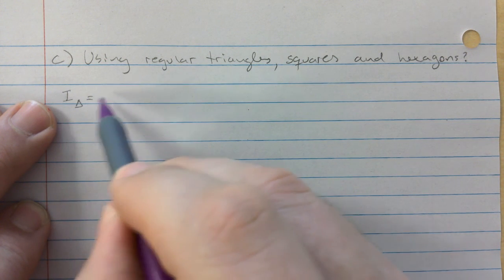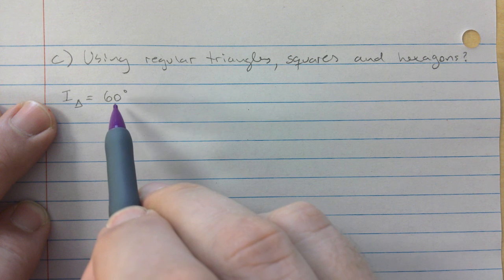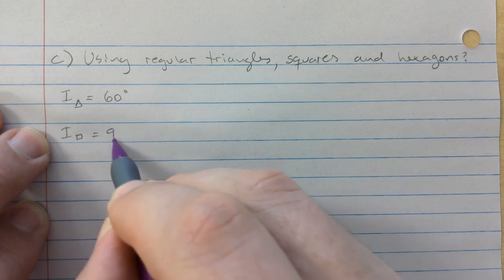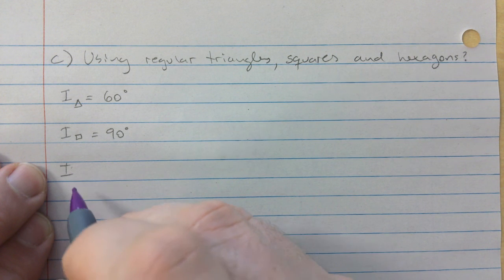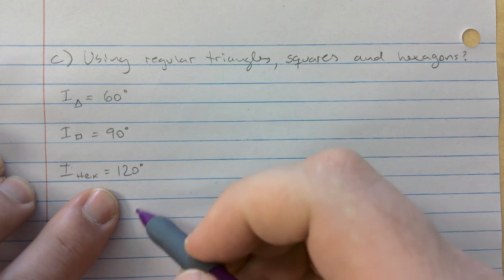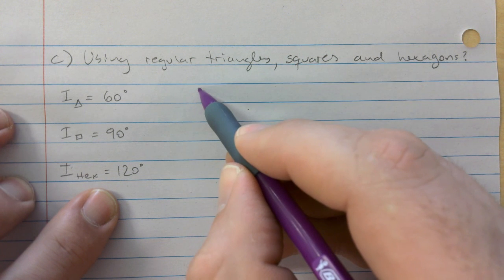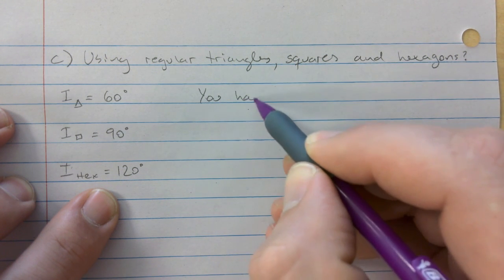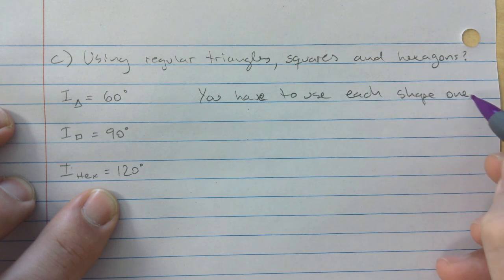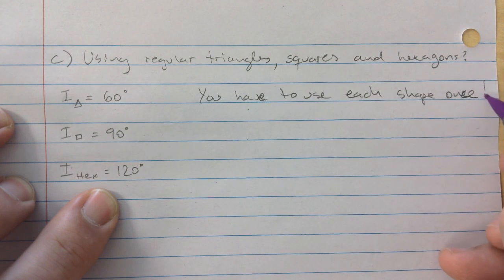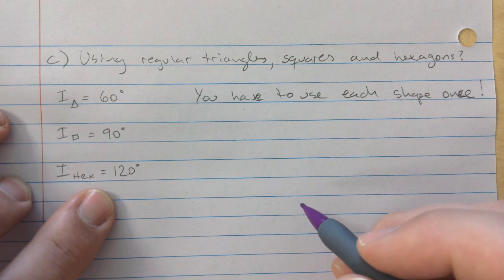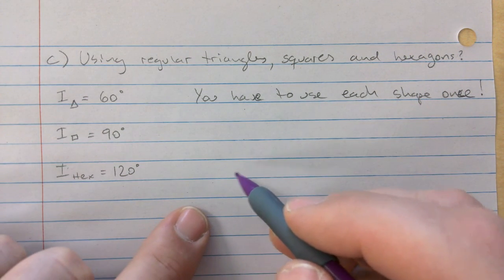You know that the interior angle of a regular triangle, that would be an equilateral triangle, would be 60. The interior angle of a square would be 90. And the interior angle of a hexagon, we already discovered, we already calculated that that's 120. You have to use at least each one of these shapes once, and then you can keep going until you eat up the whole 360 degrees. I'll give you a visual in a bit. Right now, just write it down.